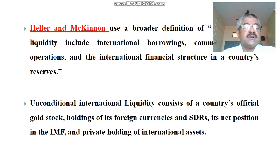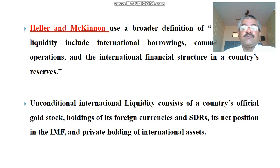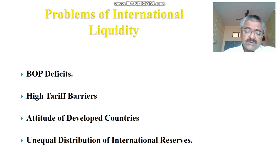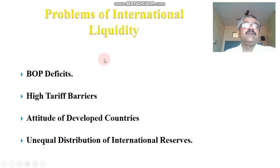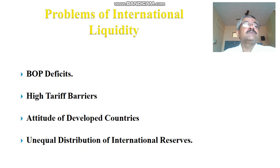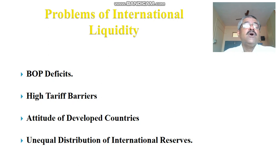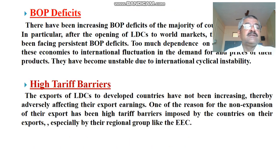This is the most important element that decides a country's international liquidity conditions. That is why the unconditional international liquidity position should be consolidated. Majority of countries are facing international liquidity problems, which definitely hampers development in international trade. The main problems include BOP deficits, high tariff barriers, attitude of developing countries, and unequal distribution of international reserves. I will explain each of these in a little more detail.